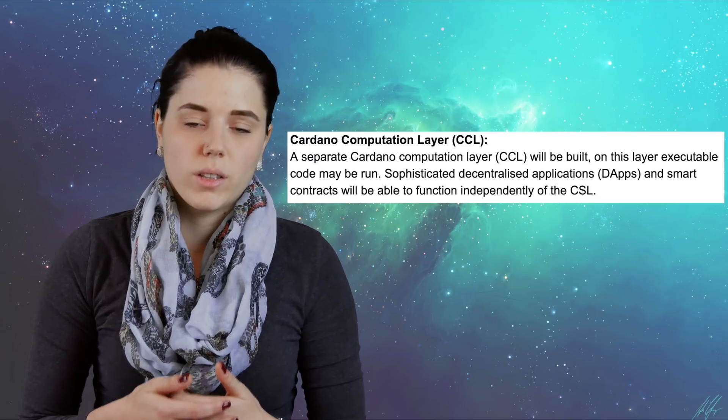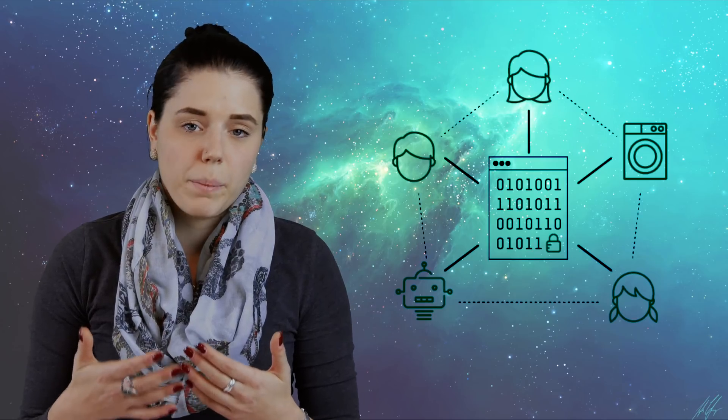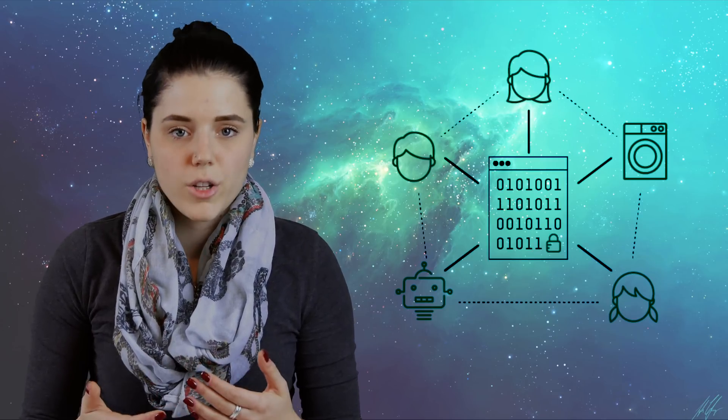The second layer is the Cardano computational layer, or CCL. Say that three times fast. And this is a separate layer in which executable code will be run on. Sophisticated decentralized applications, or DAPs, and smart contracts will be able to run independently on this layer.